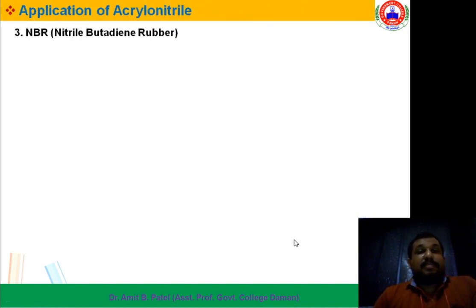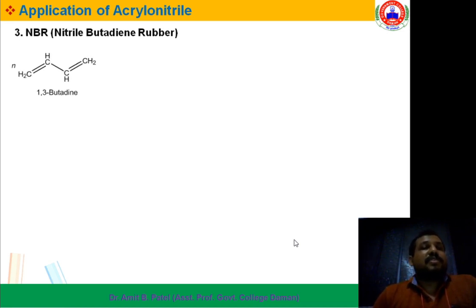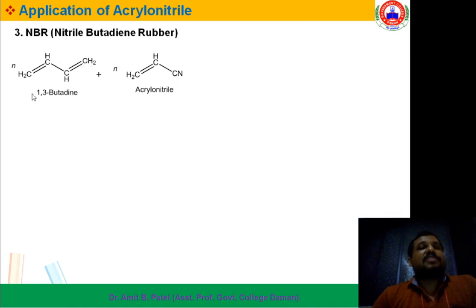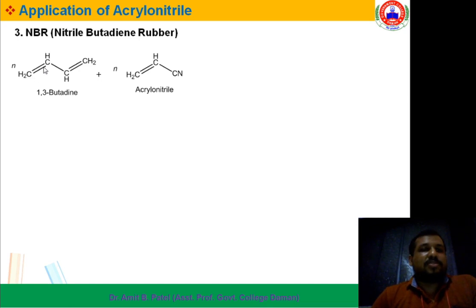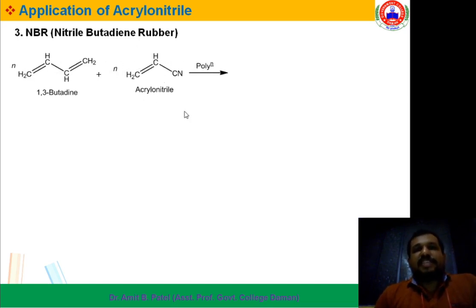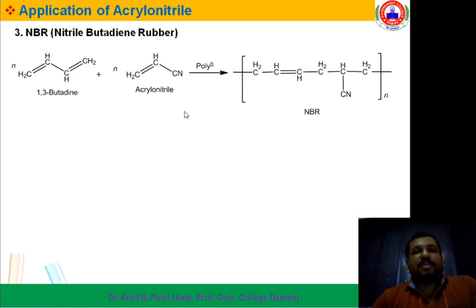The next application is NBR — Nitrile Butadiene Rubber. It is also a copolymer. Acrylonitrile reacts with 1,3-Butadiene. Butadiene has two double bonds at the 1 and 3 positions. 1,3-Butadiene reacts with Acrylonitrile and polymerization takes place to form the copolymer called NBR, Nitrile Butadiene Rubber. The double bond migrates during the reaction.